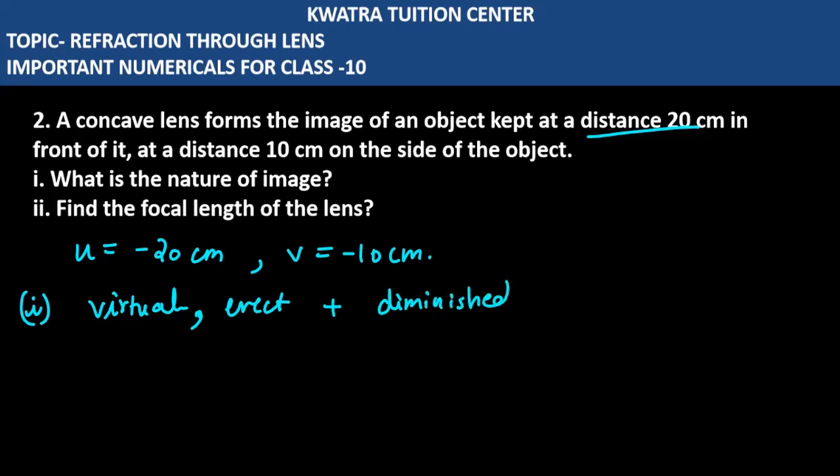Now let's look at the second part. The focal length of this lens is very easy to find. We just apply the formula: 1/v - 1/u = 1/f. So 1/(-10) - 1/(-20) = 1/f.